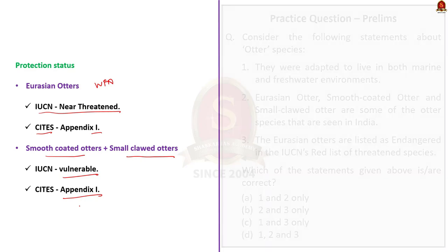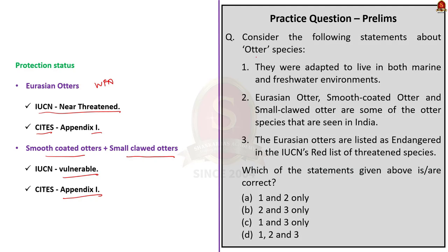Eurasian otters are listed as near threatened in the IUCN Red List and listed in Appendix 1 of CITES. Smooth-coated otters and small-clawed otters are listed as vulnerable in the IUCN Red List and also in Appendix 1 of CITES. Statements 1 and 2 are correct. Statement 3 is incorrect because Eurasian otters are listed as near threatened, not vulnerable. The correct answer is option A — 1 and 2 only.